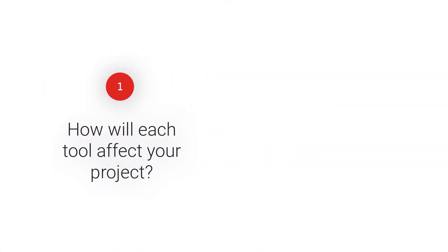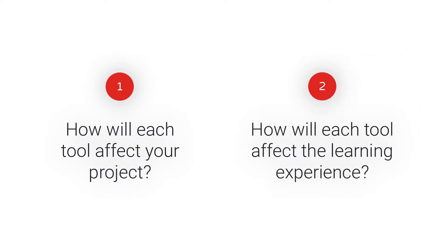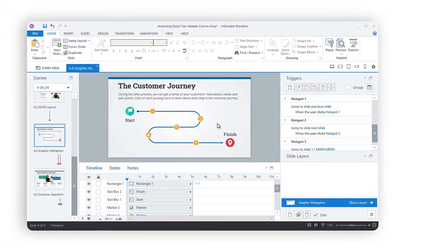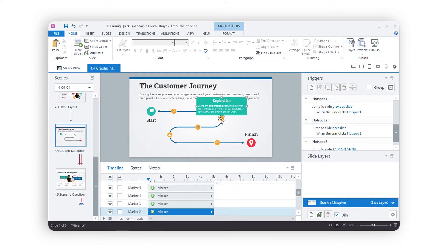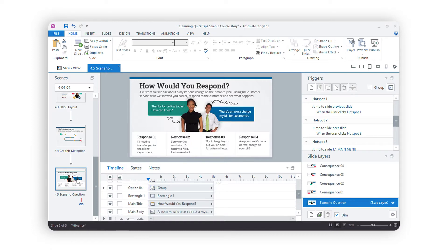First, how will each tool affect your project? And second, how will each tool affect the learning experience? Let's start by looking at the first of these two questions. Articulate Storyline and RISE are two very different e-learning authoring tools. On one hand, you have Articulate Storyline, which you can use to create a fully customized e-learning course — everything from simple click-the-next-button-to-continue style courses to complex branching scenarios and simulations. With Articulate Storyline, the sky's the limit to what you can create.